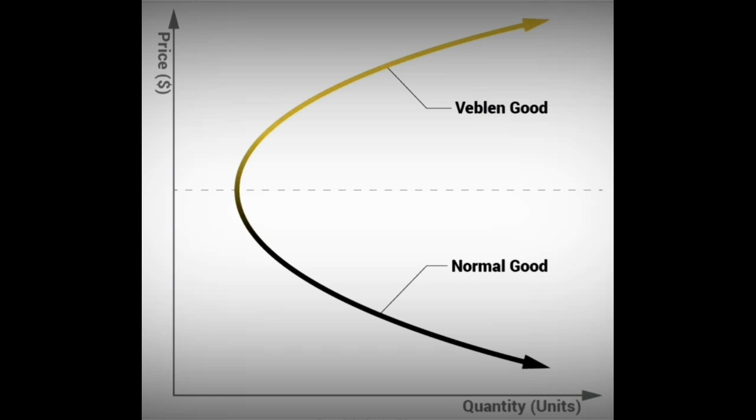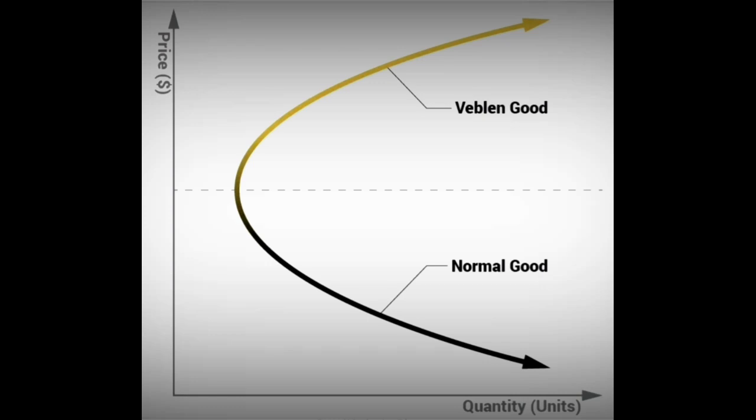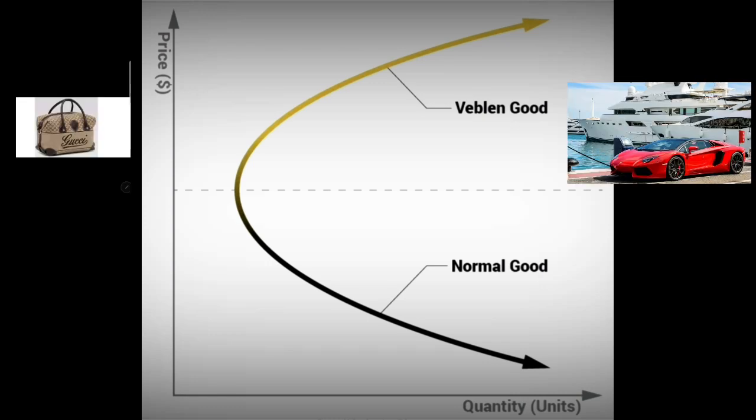Let us look at the reasons for the Veblen effect. The first is quality perception. For certain luxury goods and services, when prices are higher, the goods are often perceived to be of higher quality. Therefore, a price increase is seen as evidence of the producer maintaining or improving quality. For example, the demand for a designer handbag rises with an increase in its price, as the price increase is viewed by consumers as evidence that the producer has improved the quality of the handbag.